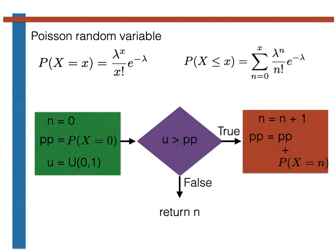pp is thus equal to p0, p of x equals 0, plus p of x equals 1. In other words, pp is the value of the cumulative probability distribution function at small x equals 1.